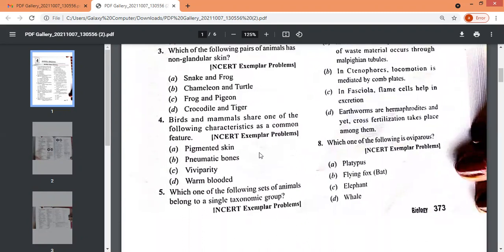Birds and mammals share one of the following characteristics as a common feature. Pigmented skin, pneumatic bones, viviparity, warm-blooded. And then comes the fifth question.